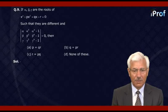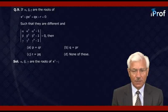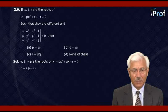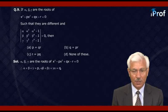Now, α, β, γ are the roots of the equation x³ - px² + qx - r = 0. Therefore, α + β + γ = p, αβ + βγ + γα = q, and αβγ = r.